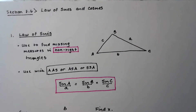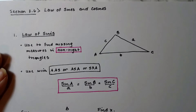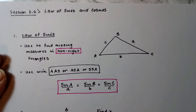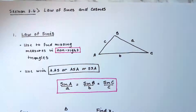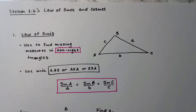Today we're going to skip into section 8.6 — we will do 8.5 when I get back, but I want to be there because we just need to work on some visual stuff for that one. So anyway, we'll go back to that and we're going to skip over to the Law of Sines and Cosines.